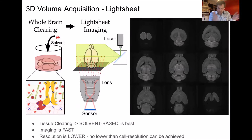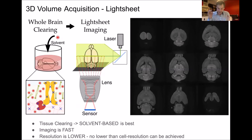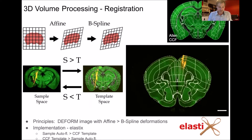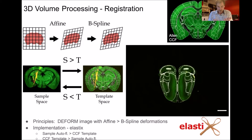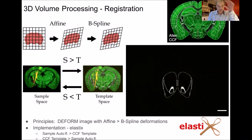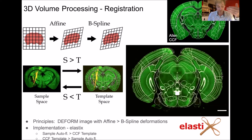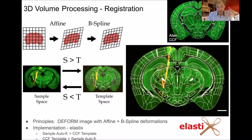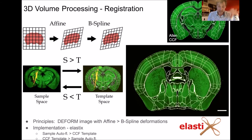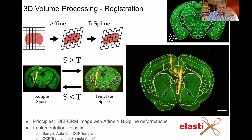So, either using your serial section two-photon technique or your light sheet, you've got your 3D reconstructed brain with a red CM-dii channel showing your electrode tracks, and a green autofluorescent channel for registration. The aim of registration is to take your original sample and align it with a template of the mouse brain, essentially aligning it with an atlas to annotate your sample in terms of brain regions.